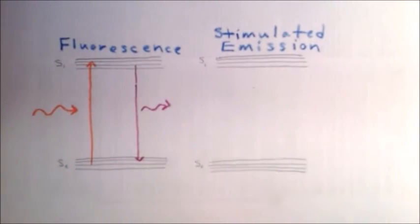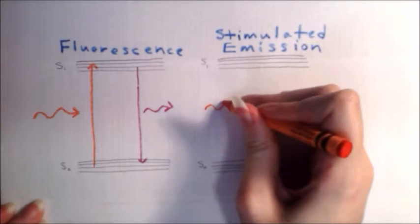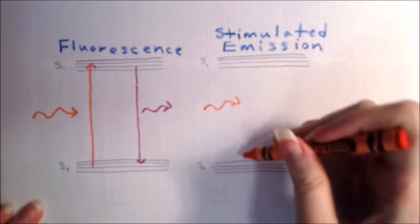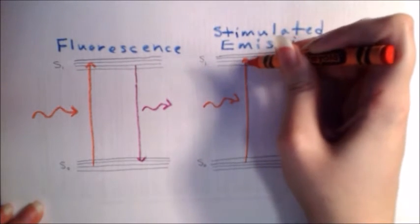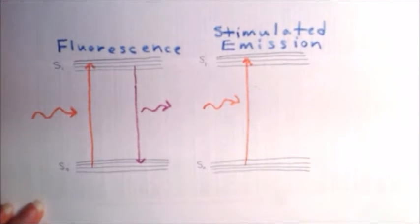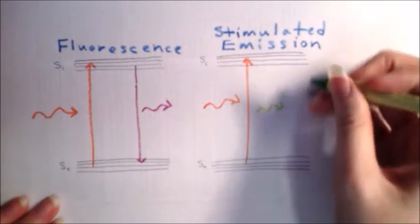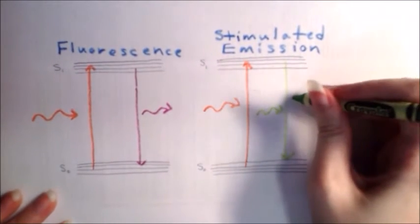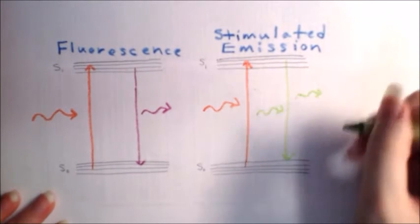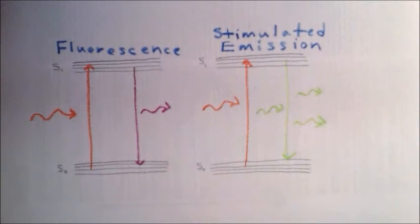The stimulated emission process begins the same way, with the fluorophore absorbing an excitation photon and going to a higher energy state. Once it's reached that state, however, a depletion beam is added. The fluorophore absorbs the depletion photon and returns to the ground state by emitting two photons with wavelengths equivalent to the depletion beam. The wavelength of this depletion beam can be tailored to be significantly different than the fluorescence wavelength. As a result, a filter can be used to block all depletion wavelengths but pass most of the fluorescence wavelengths, preventing detection of those fluorophores that have undergone stimulated emission depletion.